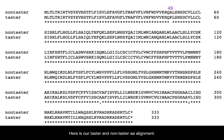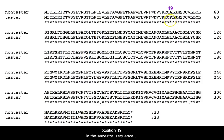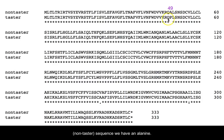Here is our taster and non-taster amino acid alignment. We can see that the first amino acid difference is at position 49. In the ancestral sequence — the taster allele — we have a proline, and in the derived or non-taster sequence we have an alanine.